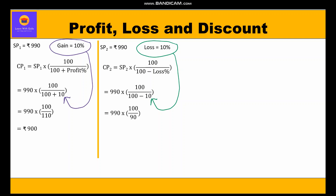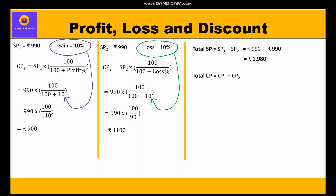By further calculation, we get the cost price of the second jeans as rupees 1100. Total selling price equals SP1 + SP2 = 990 + 990 = rupees 1980. Total cost price equals CP1 + CP2 = 900 + 1100 = rupees 2000.